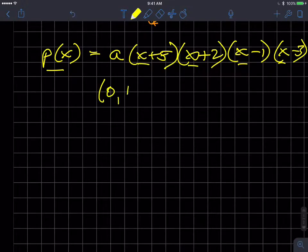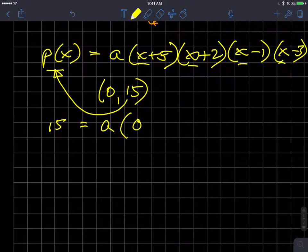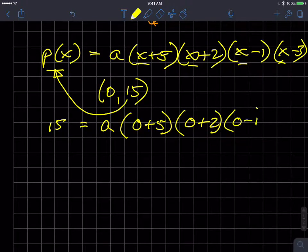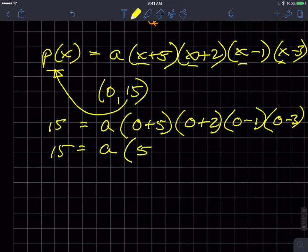The y-intercept is 0, 15, which means that I can put 15 in for y or the output of my function or the range. And I get 15 is equal to a times 0 plus 5 times 0 plus 2 times 0 minus 1 times 0 minus 3. Then I get 15 is equal to a times 5 times 2 times negative 1 times negative 3.